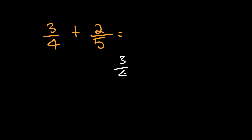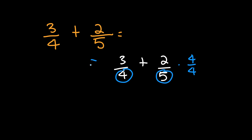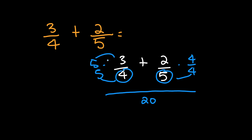Alright, here's another example. Let's rewrite this problem and multiply each denominator on the opposite side. Five times four is twenty, and four times five is twenty — that's a good sign. Then five times three is fifteen, and two times four is eight. Fifteen plus eight gives us twenty-three over twenty.